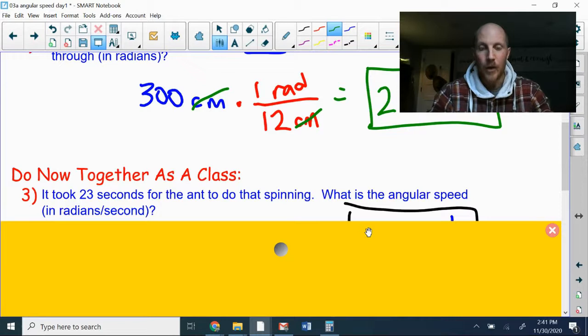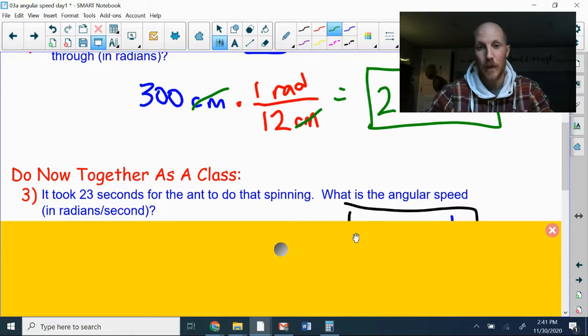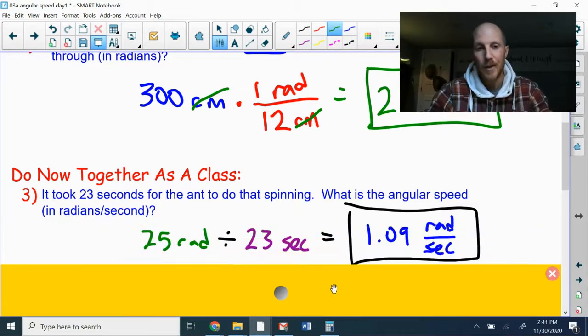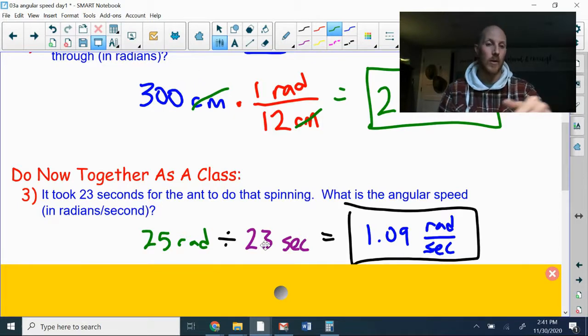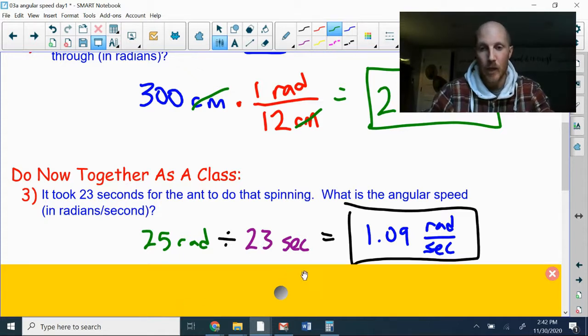All right, next up: it takes 23 seconds for the ant to do all that spinning. What is its angular speed? Okay, well we have two options really. The first option is kind of the most straightforward. Here we just found that it went 25 radians in the last part. Easiest thing to do is to take that 25 radians divided by the 23 seconds. Distance divided by time equals speed, whether it's an angular speed or a linear speed, rotational speed, whatever—you take the distance divided by time, it is the speed. So there, 1.09 radians per second.